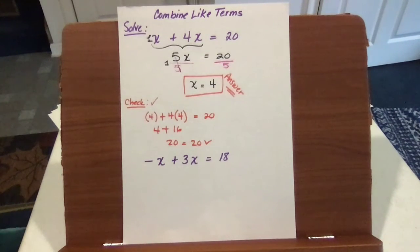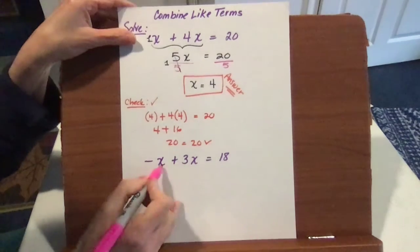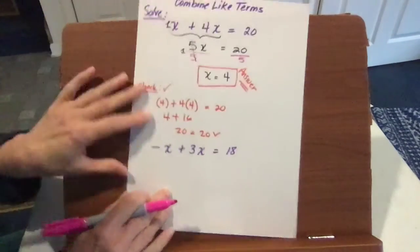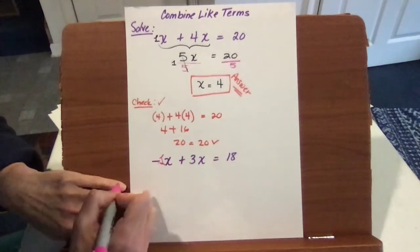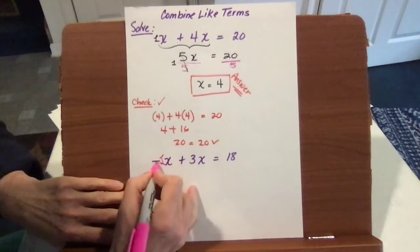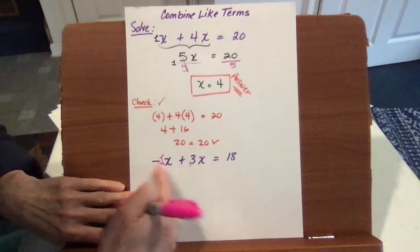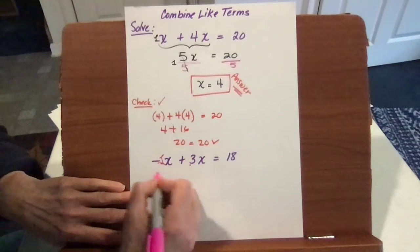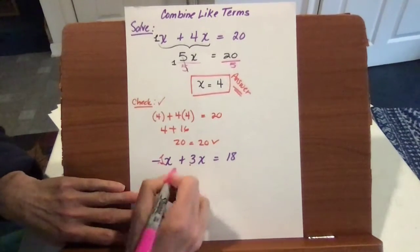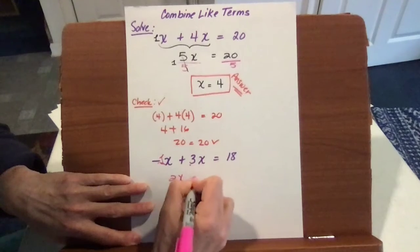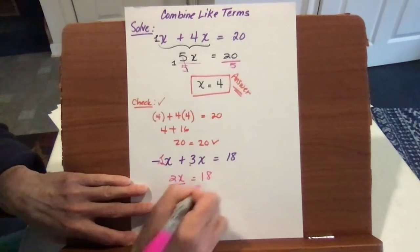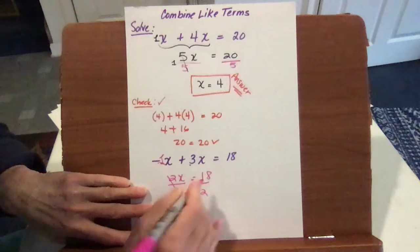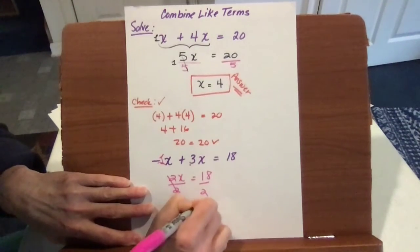It's a good idea to check all the time. Next up, we have negative x plus 3x. This negative x has a 1 in front, so it's really negative 1 plus 3 — you always add the coefficients. Because of the difference in signs, we're subtracting, so 2x equals 18. Divide by 2 on both sides, and x equals 9.